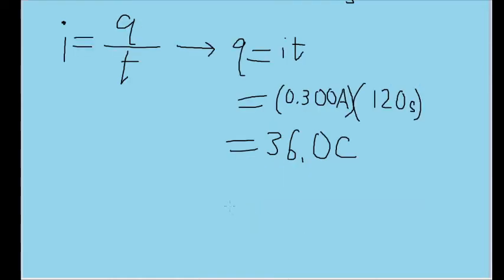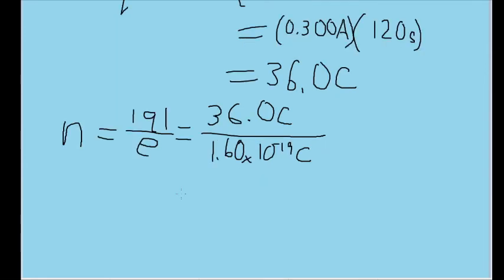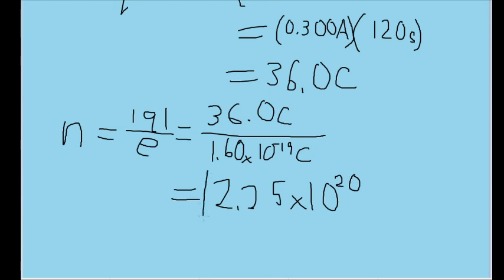Now we know the charge, so we can use this to find the number of electrons in this charge. Remember that because of how charge is quantized, the integer number of protons or electrons in a charge is equal to the magnitude of the charge divided by the elementary charge. Plugging in our charge and the elementary charge, we find that 2.25 times 10 to the power of 20 electrons pass through the body in 2 minutes.